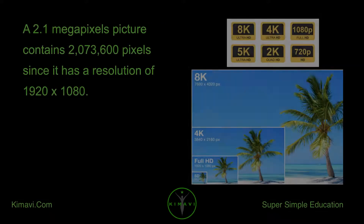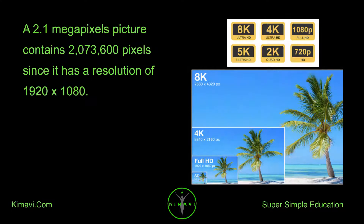A 2.1 megapixel picture contains 2,073,600 pixels, since it has a resolution of 1920x1080.